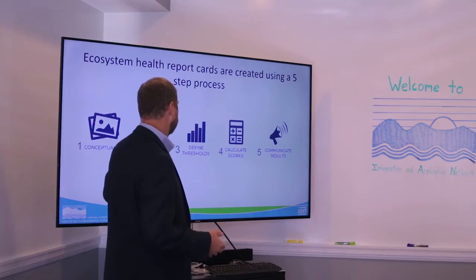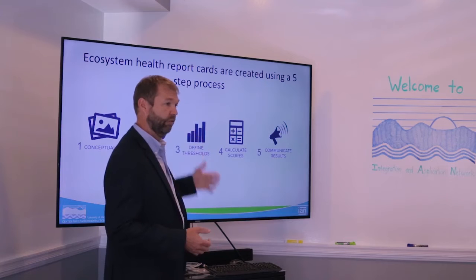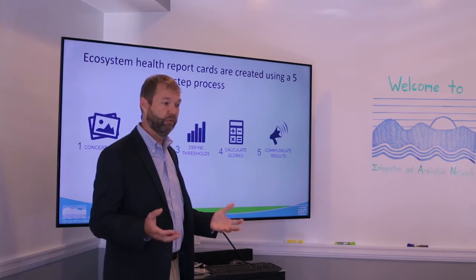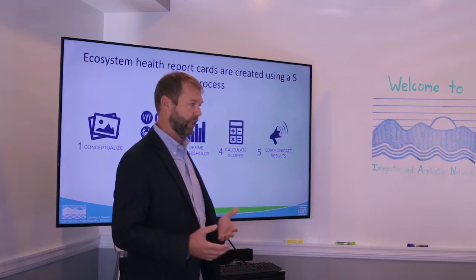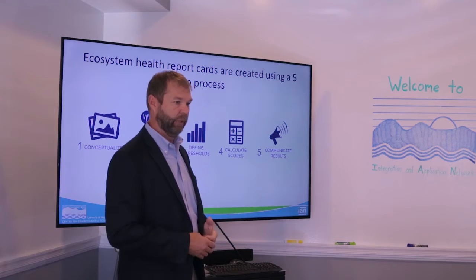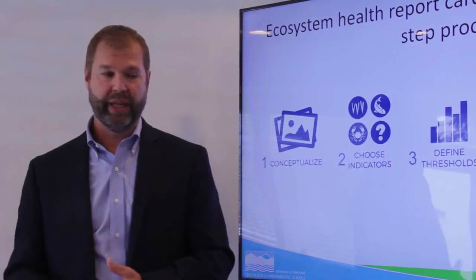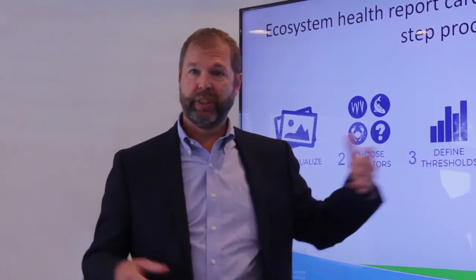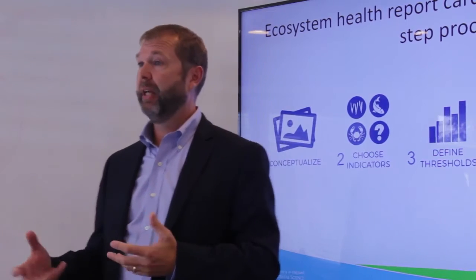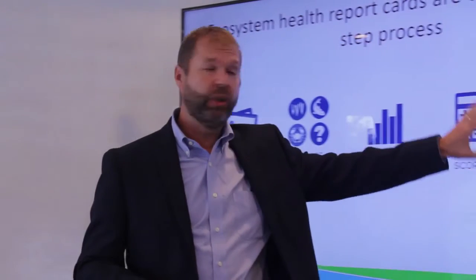When we have those indicators, we can then start to define the desired condition for those things that we're measuring. So for all the things we have data for, what do we want those data to look like? What's a good concentration of a pollutant, a good biodiversity indicator, or a societal impact measure? When we have that, we can calculate the scores in step four — we take the data that we have, apply it to the data that we want, and come up with a score.